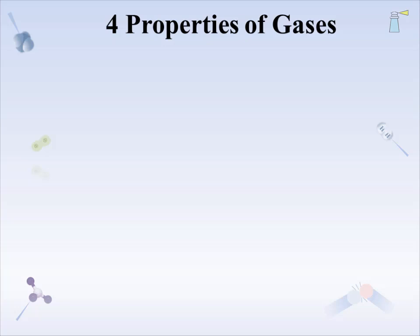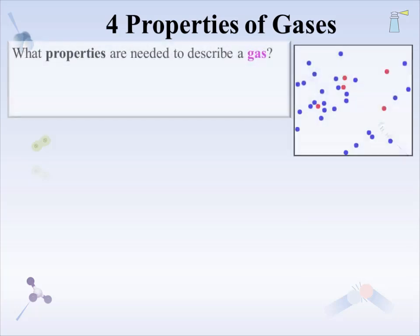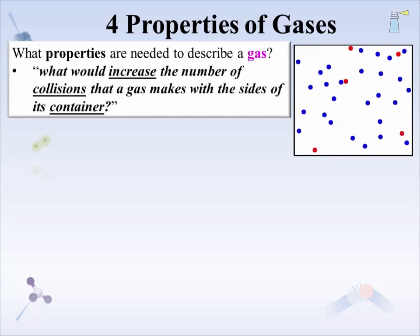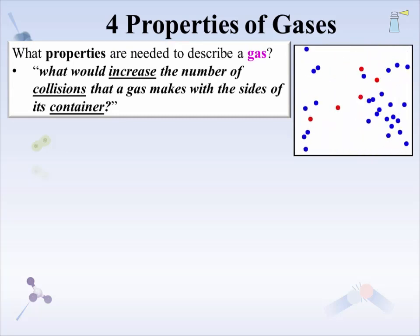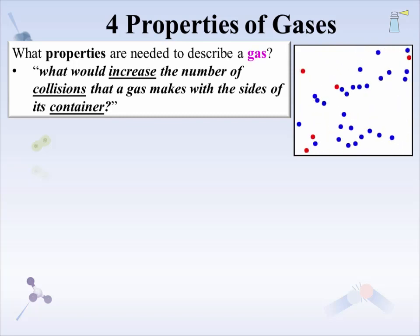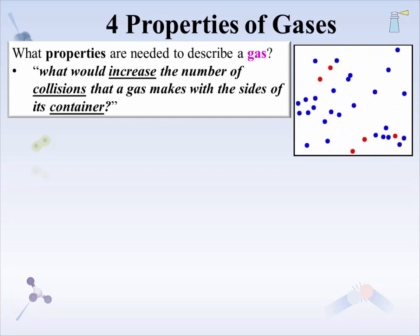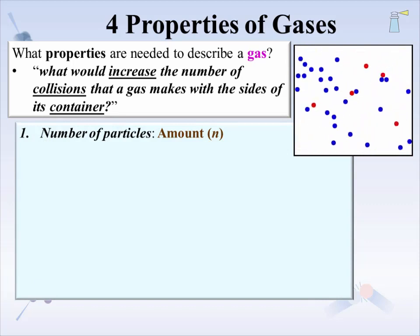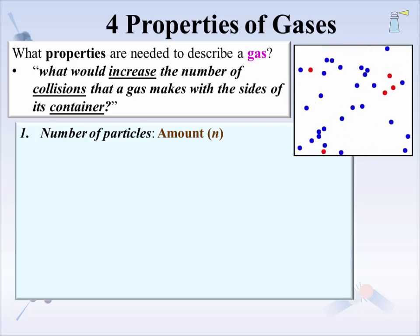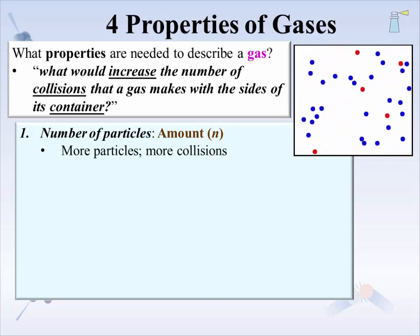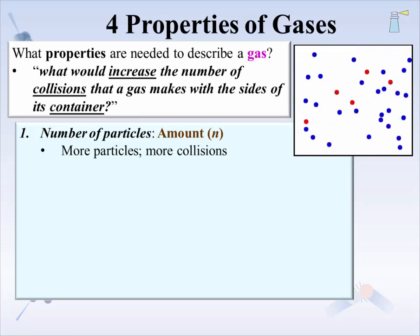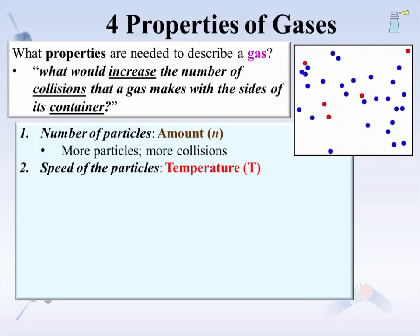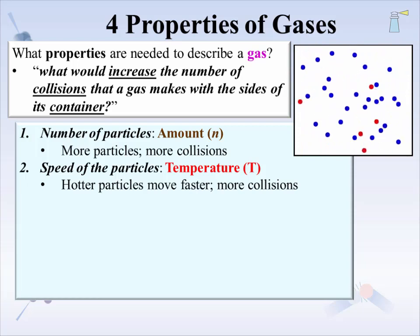The KMT is a lens to bring gas behavior into focus. We can use it to build an understanding of the four basic properties of gases by asking: what properties are needed to describe a gas, and what would increase the number of collisions a gas makes with the sides of its container? The most obvious answer is an increase in the number of particles — that is the property of amount, lowercase n, the number of moles. More particles leads to more collisions. Another factor that increases collisions is particle speed, which is the property of temperature, T. Increasing temperature means faster moving particles and more collisions.